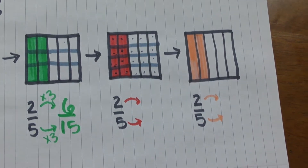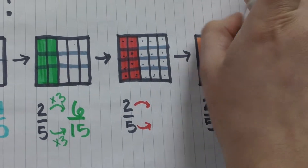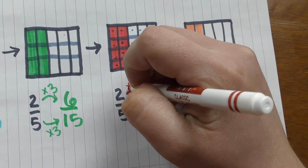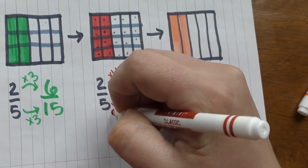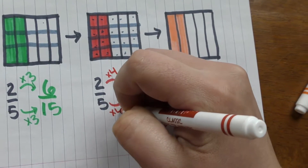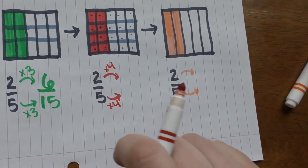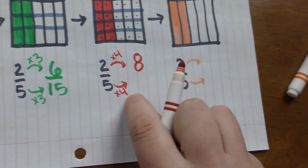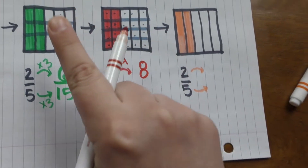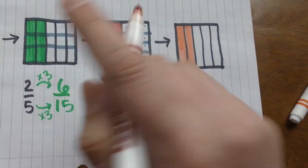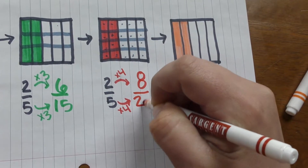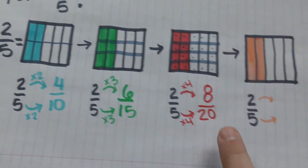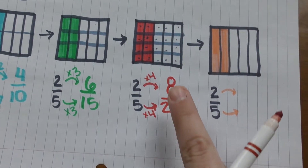If I were to do this as a multiplication problem, I would multiply the numerator times four and the denominator times four. Two times four is eight and five times four is twenty. So we found that two fifths is also equal to eight twentieths.